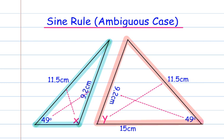If we were going to use the sine rule, we'd need to match up the angles with their sides. So X would be opposite 11.5, Y is opposite 11.5, 49 would be opposite 9.2, but 49 is also opposite 9.2 because this is the same line.